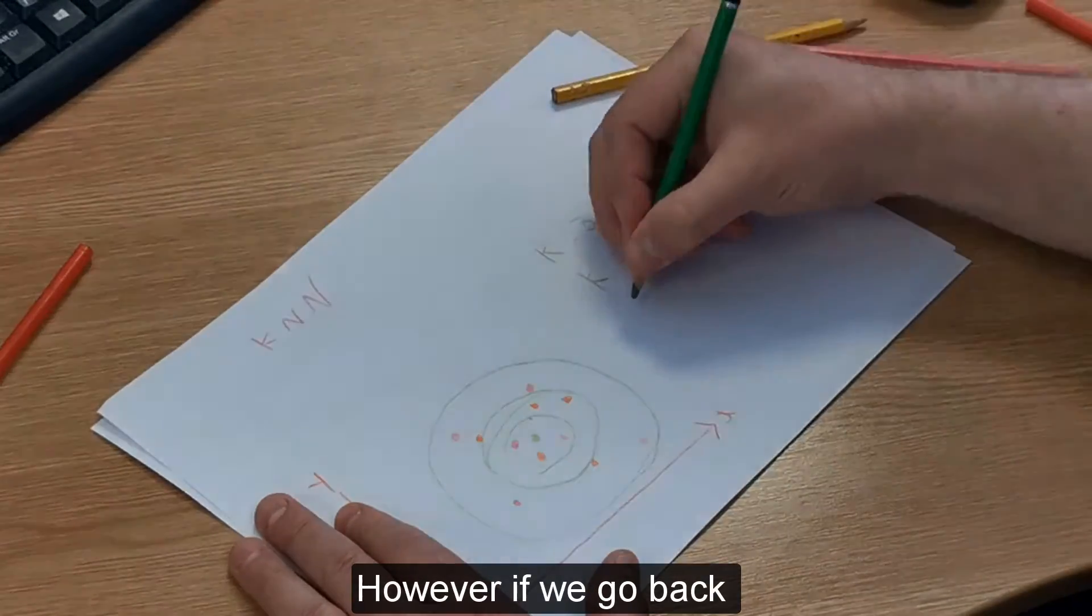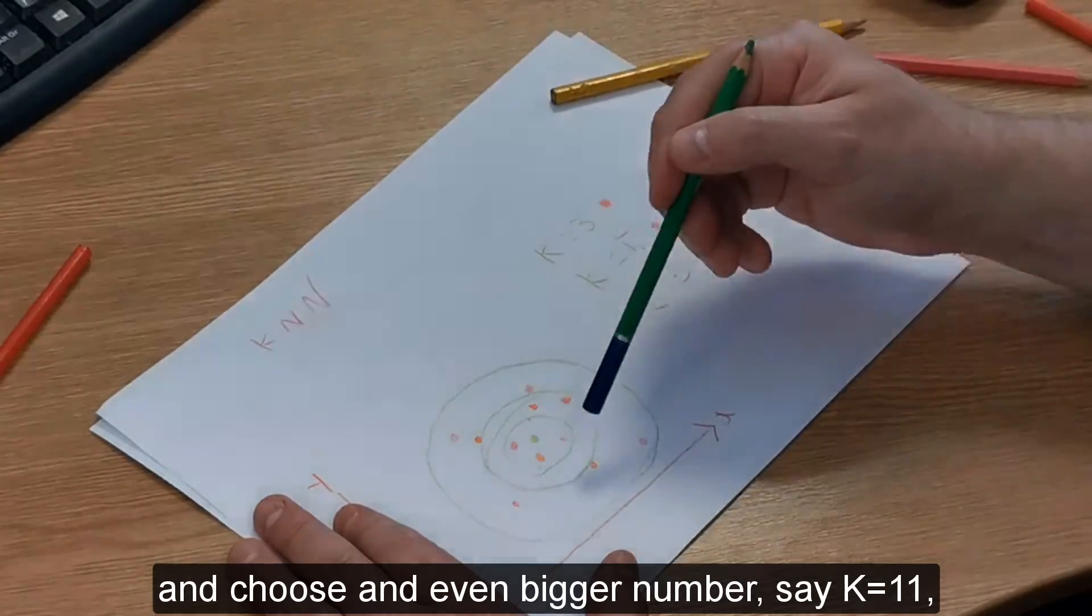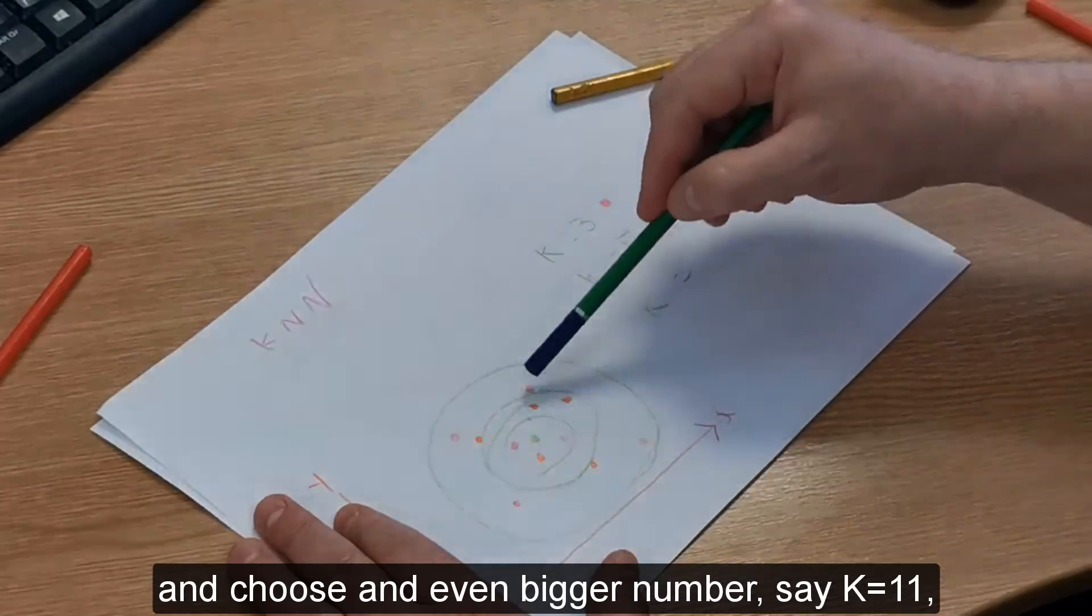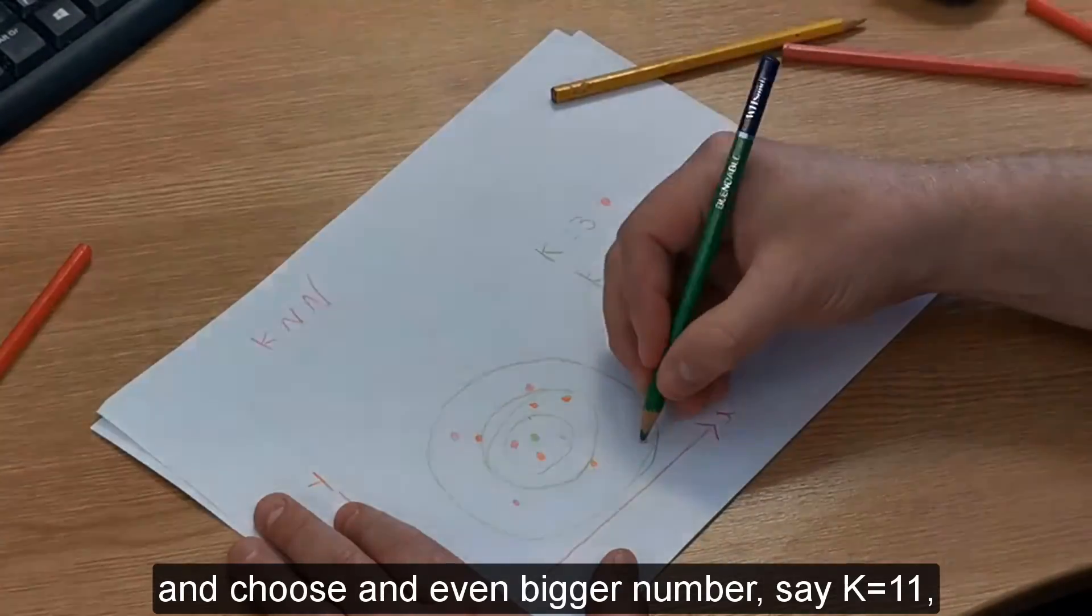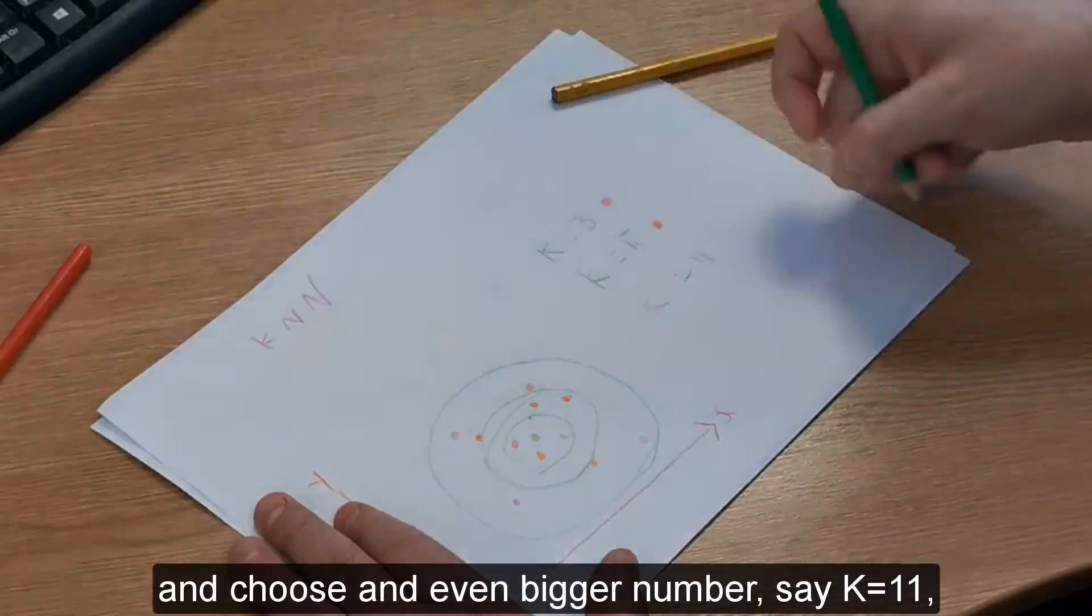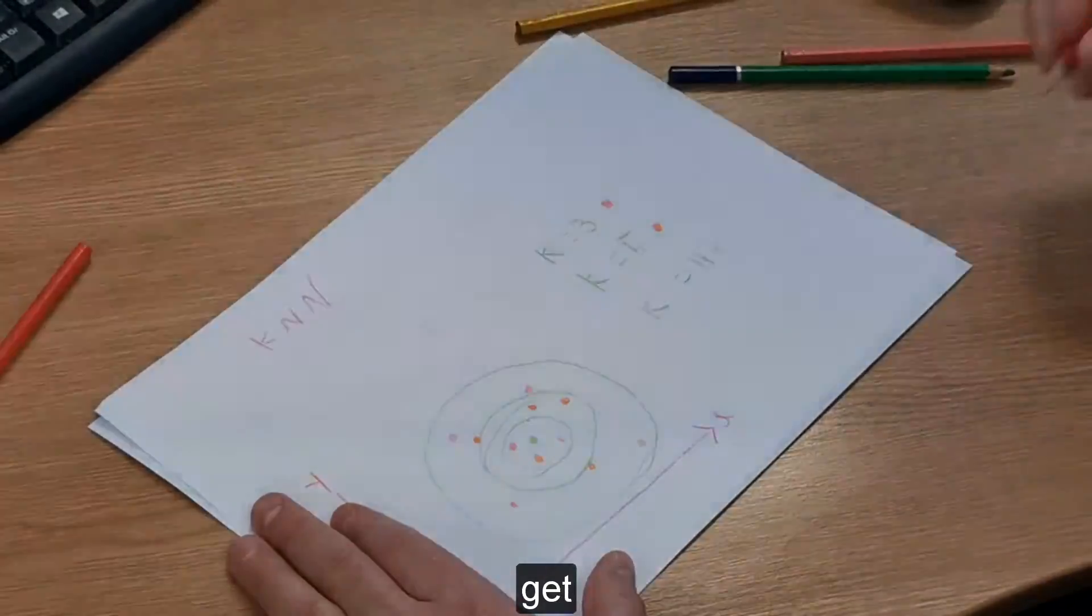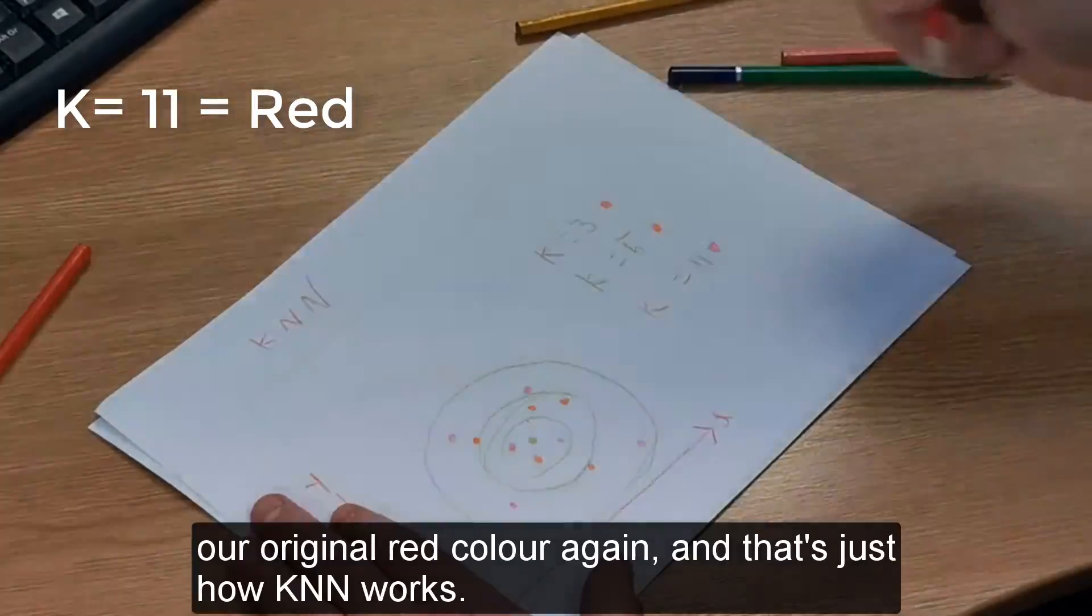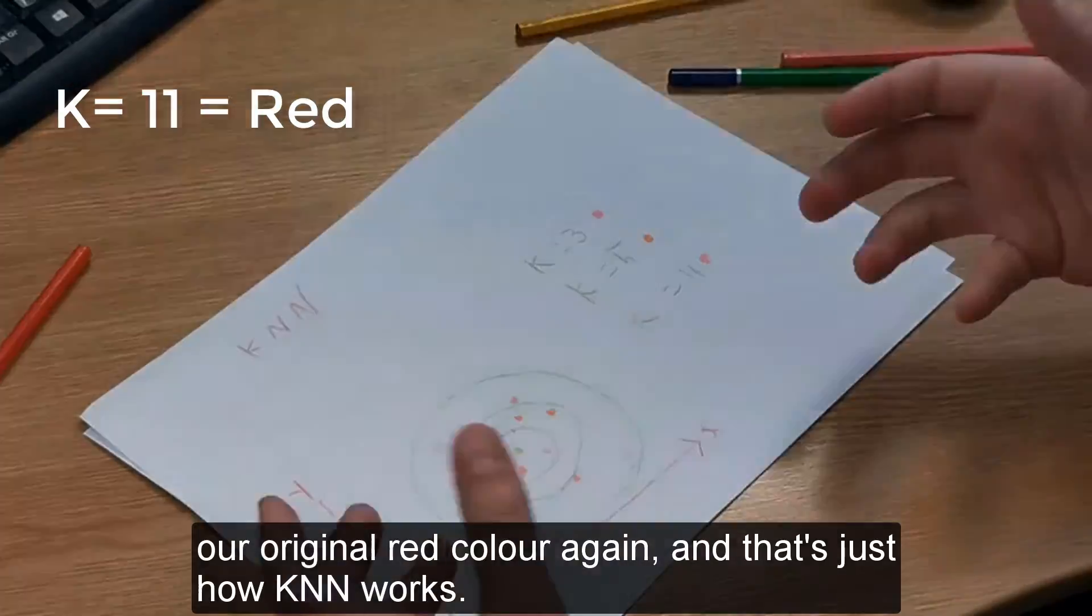However, if we go back and look at an even bigger number, k equals 11, we get that original red color as our data point again. That's just how K-Nearest Neighbor works.